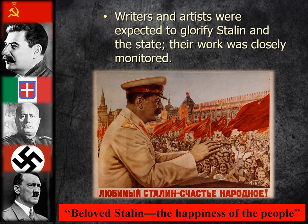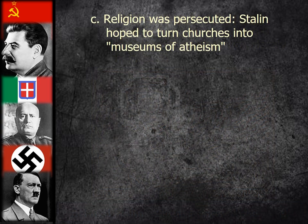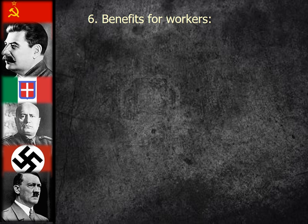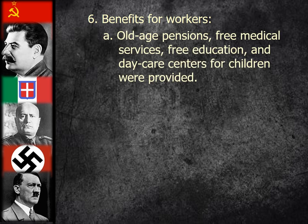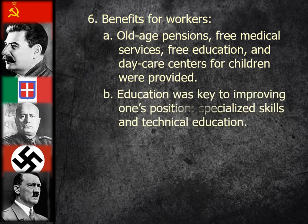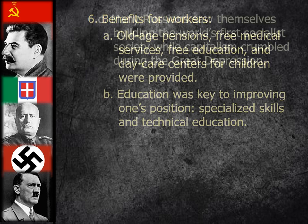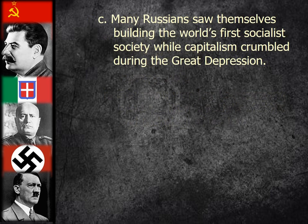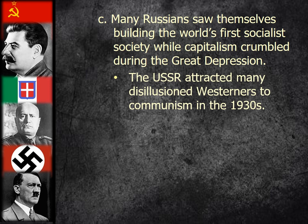Benefits for workers included old age pensions, free medical services, free education, and day care centers for children. Stalin saw education as key to improving one's position, emphasizing specialized skills and technical education rather than traditional education. Many Russians saw themselves building the world's first socialist society while capitalism crumbled during the Great Depression. The USSR attracted many disillusioned Westerners to communism in the 1930s. Of course, they did not see the millions Stalin was killing, because he kept that closely under wraps.